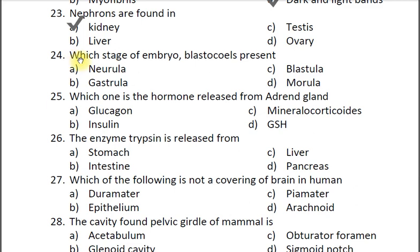Question twenty-four: In which stage of embryo is the blastocoel present? A neurula, B gastrula, C blastula, D morula. The correct answer is C blastula. The cells of the blastula form an epithelial layer called the blastoderm, which encloses a cavity called the blastocoel.